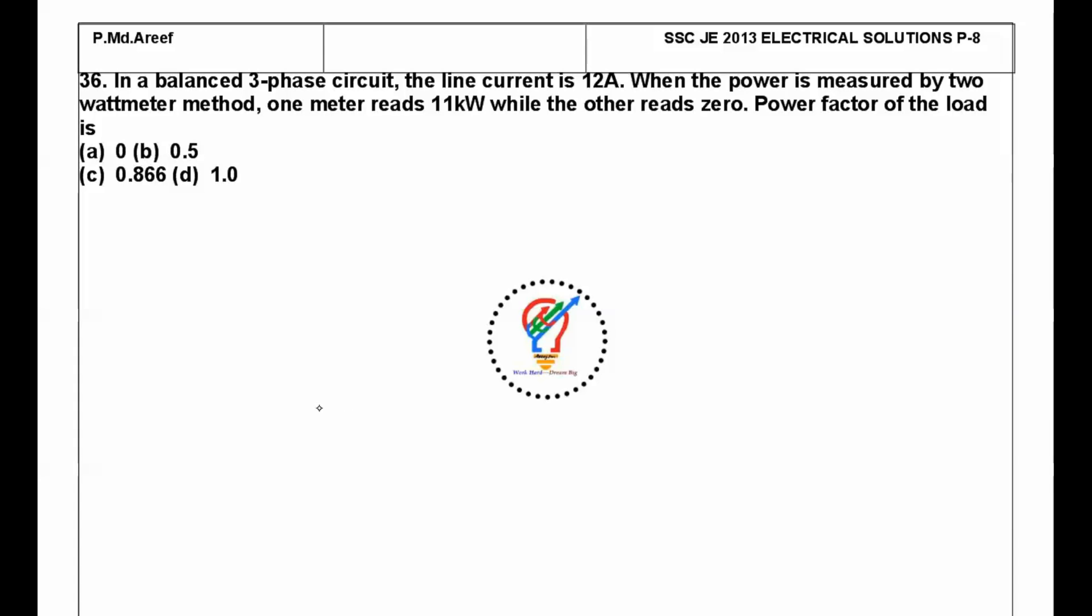Hi, hello friends, welcome to my YouTube channel. In this session we will continue our SSC JE 2013 electrical solutions part 8. The question on the screen is: in a balanced three-phase circuit, the line current is 12 amps. When the power is measured by two wattmeter method, one meter reads 11 kilowatts while the other reads zero.